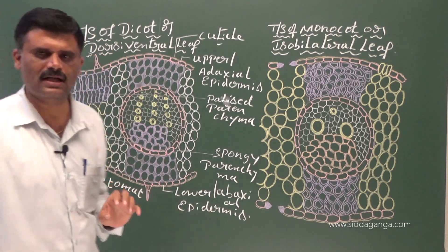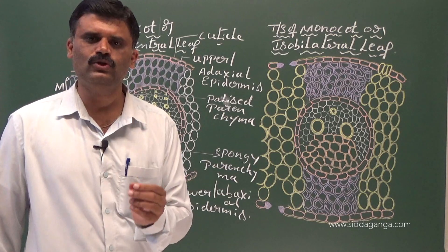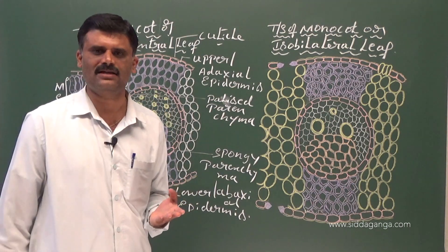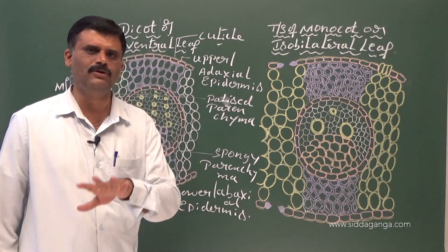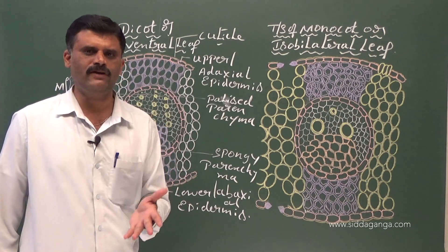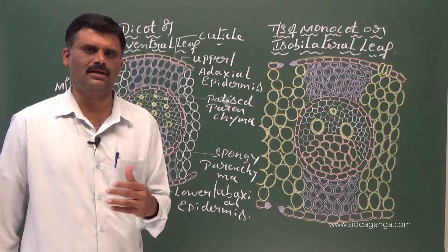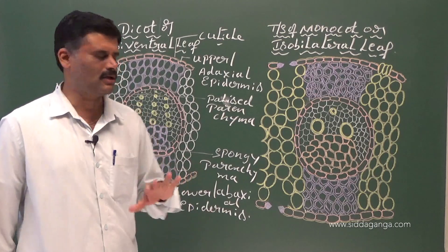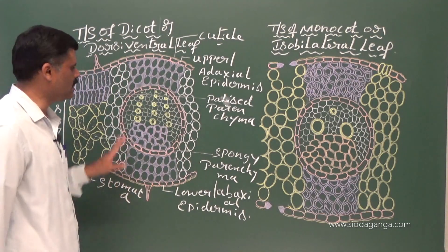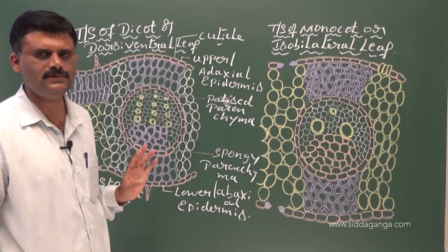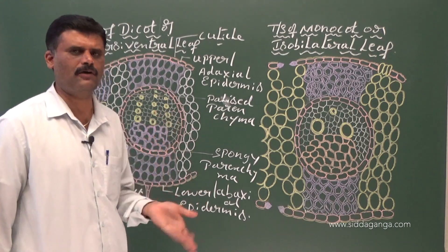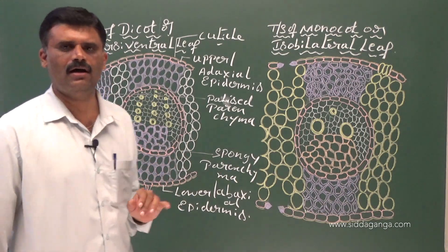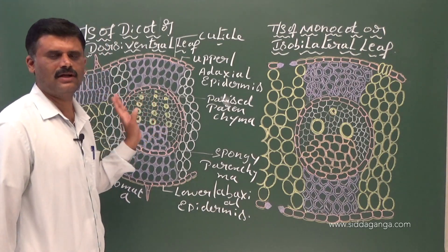Dicot leaves are hypostomatic leaves, meaning a large number of stomata are present towards the lower epidermis or abaxial surface. This applies particularly to mesophytic habitat plants. Mesophytes are plants that grow in moderate conditions — not xerophytic or hydrophytic.